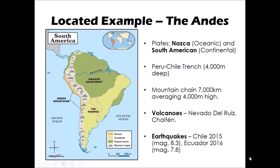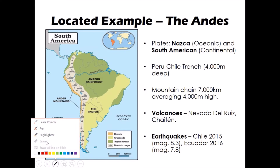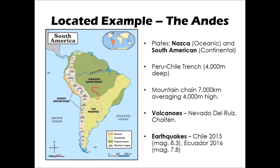A good located example of this type of plate boundary is the Andes in South America. Here we have the South American plate and the Nazca plate colliding — the plate boundary runs down the coast of South America. The Nazca plate is oceanic and the South American plate is continental. As a result we get an ocean trench developing along the boundary — in this case the Peru-Chile trench runs right the way down the coast of those two countries and is up to 4,000 meters deep.